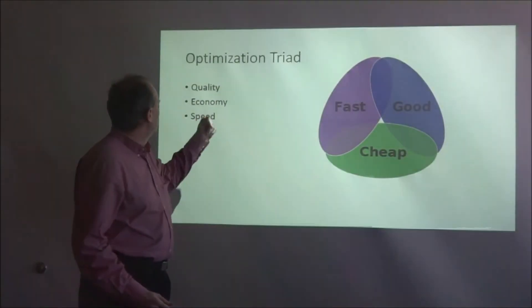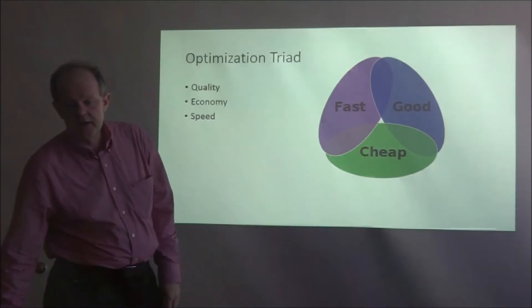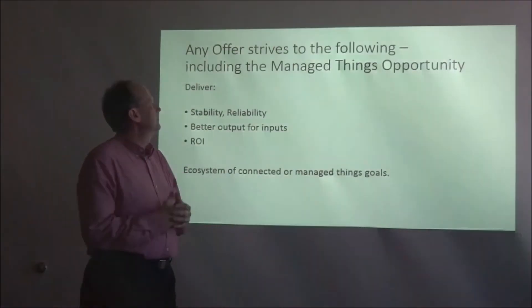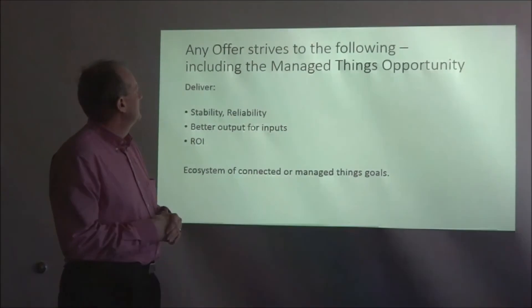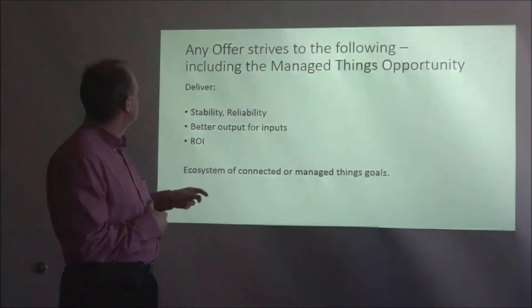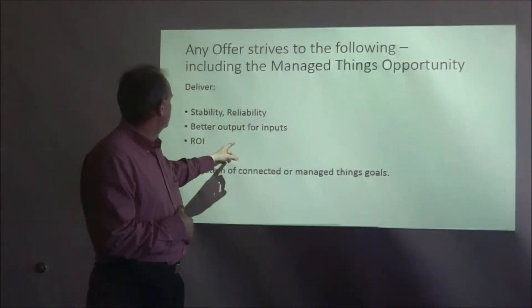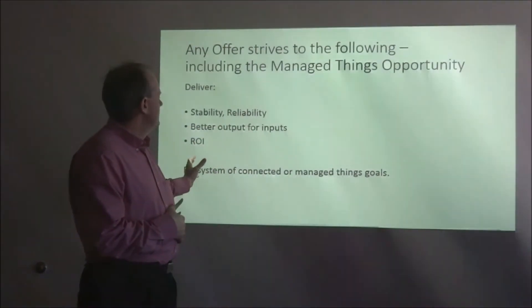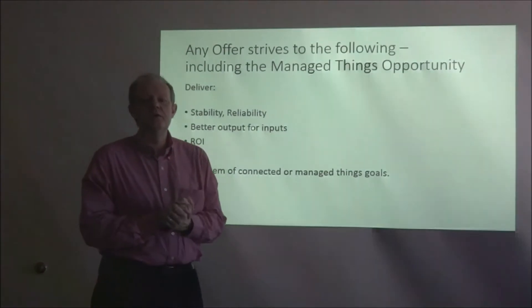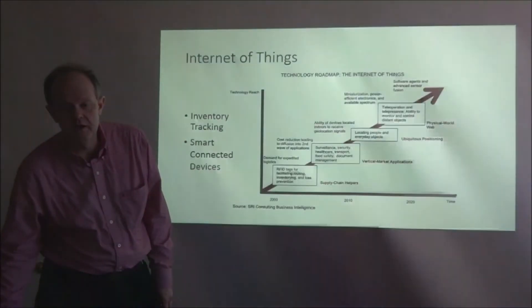There's an optimization tribe that we all hear about: quality, economy, and speed — you're trying to get the best you can possibly get. Any offer strives to deliver stability and reliability, better output for the inputs, and ROI. The ecosystem of connected things has a similar goal to BACnet in this area.